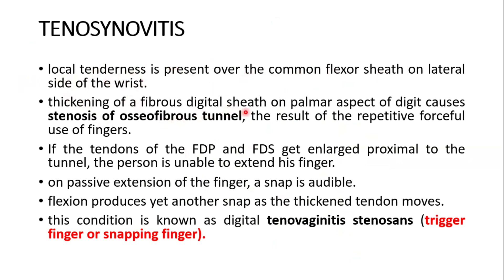Thickening of the fibrous digital sheath on the palmar aspect of the digit causes stenosis of the osteofibrous tunnel as a result of repetitive forceful use of the fingers. If the tendons of flexor digitorum profundus and flexor digitorum superficialis become enlarged proximal to the tunnel, the person is unable to extend the finger. On passive extension of the finger, a snap is audible. Flexion produces yet another snap as the thickened tendon moves. This condition is known as digital tenovaginitis stenosans — trigger finger or snapping finger.